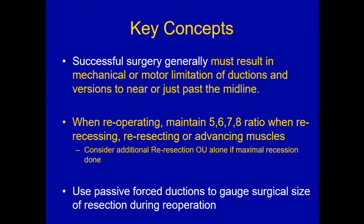Successful surgery generally must result in mechanical or motor limitation of abduction and adduction to near or just past the midline. You have to do pretty big surgeries to fix these for any length of time — in my hands, recessions alone are insufficient for most patients. I really do have to add resection so that I prevent that eye from moving past the midline very far, and I use force ductions in the OR to confirm this. When re-operating, maintain the 5-6-7-8 ratio when re-recessing, re-resecting, or advancing muscles — this helps prevent inducing strabismus, which is more likely in re-operations. You can consider additional re-resection in both eyes in almost any patient, even if maximal resection has been done on the antagonist muscles — you can almost always resect an additional 5 or 6 mm at the appropriate ratio.